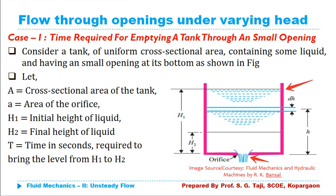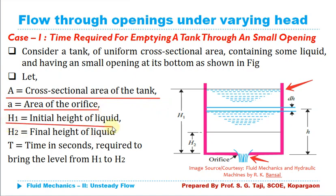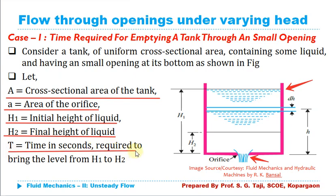Let us consider a tank having uniform area of cross section A, with a small area of orifice (small opening) provided at the bottom of the tank. H1 is the initial height of the liquid in the tank and H2 is the final height. Time t is the time in seconds required to bring the water level from H1 to H2.